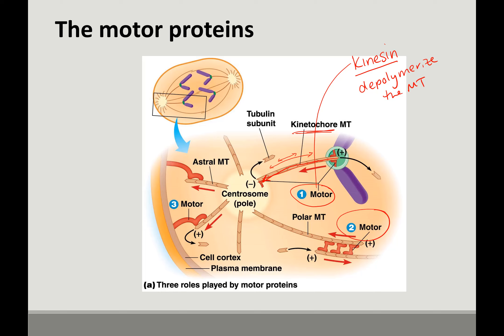The second type of motor proteins are called bipolar kinesins. They sit between two polar microtubules and actually slide the polar microtubules apart — the arrows go in both directions. They aid in polymerization, making the polar microtubules longer so that they push the centrosomes apart.